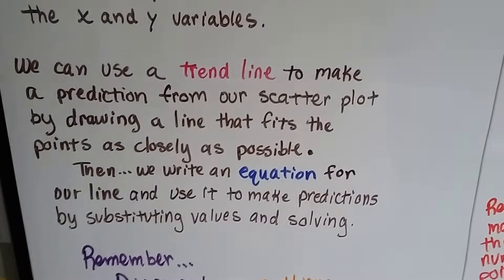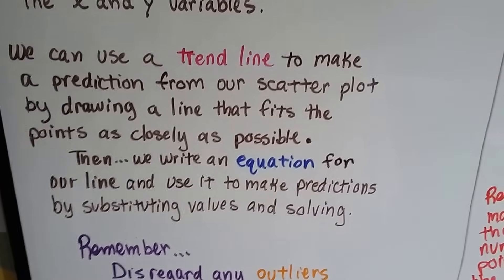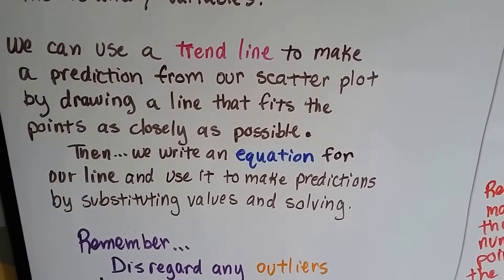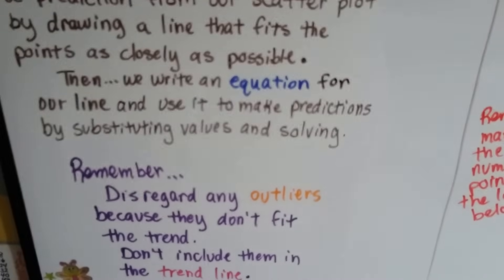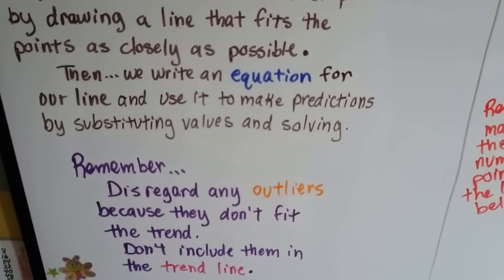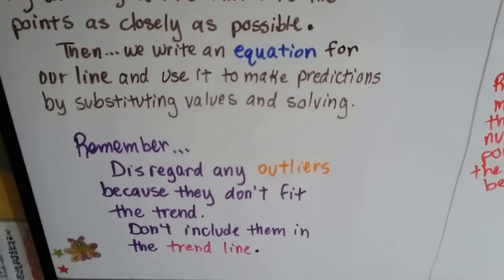We can use a trend line to make a prediction from our scatter plot by drawing a line that fits the points as closely as possible. Then we write an equation for our line and use it to make predictions by substituting values and solving.